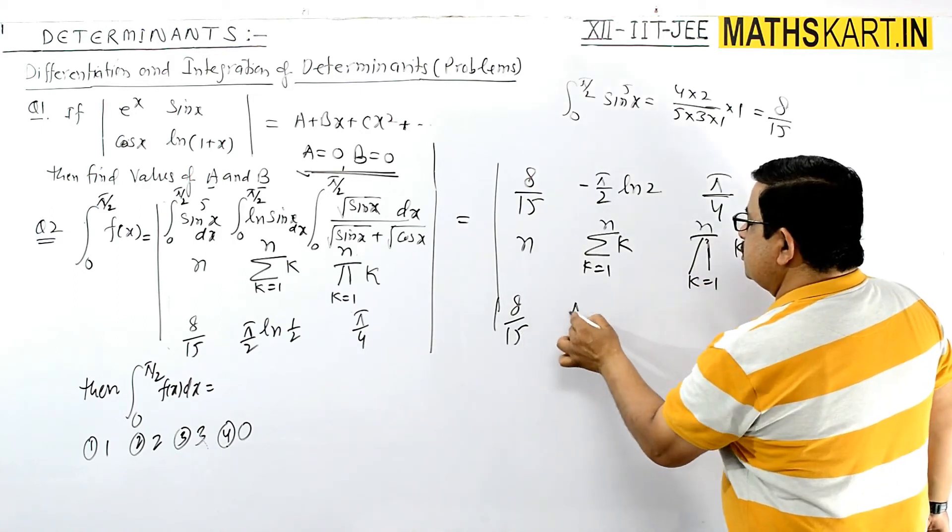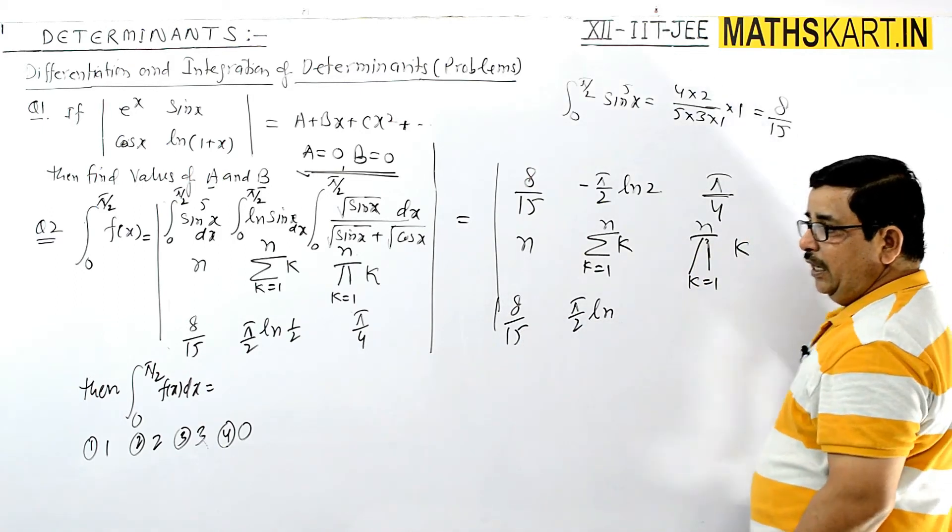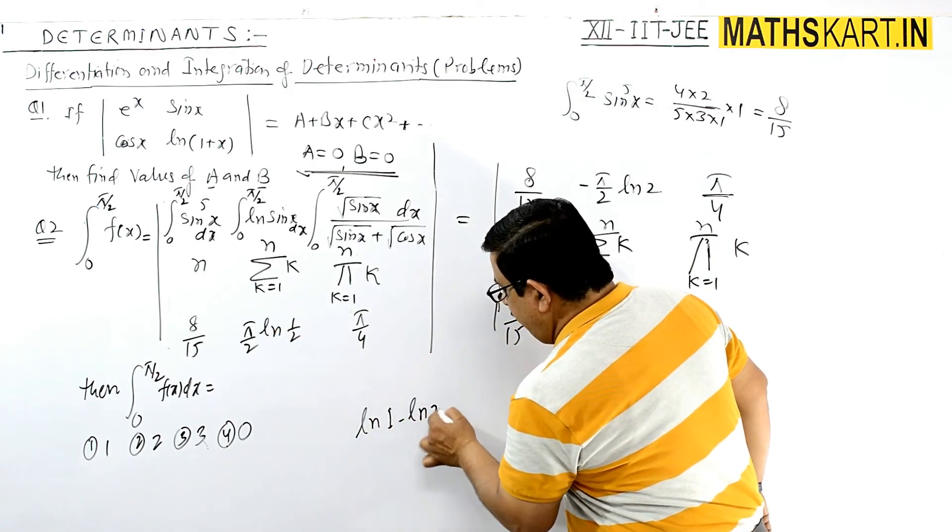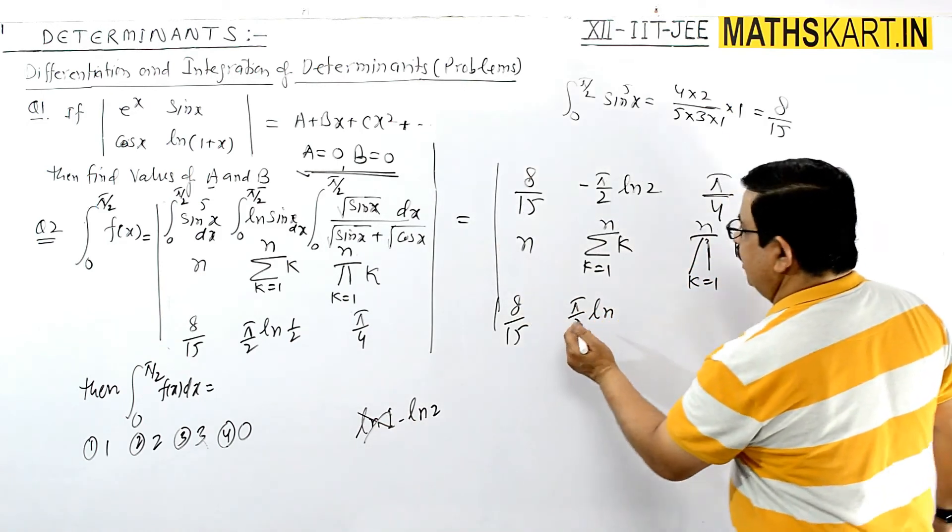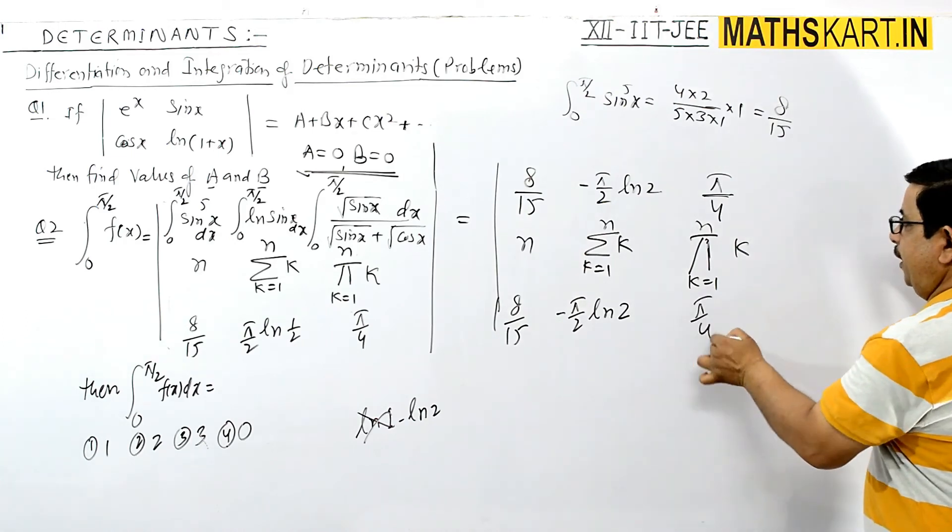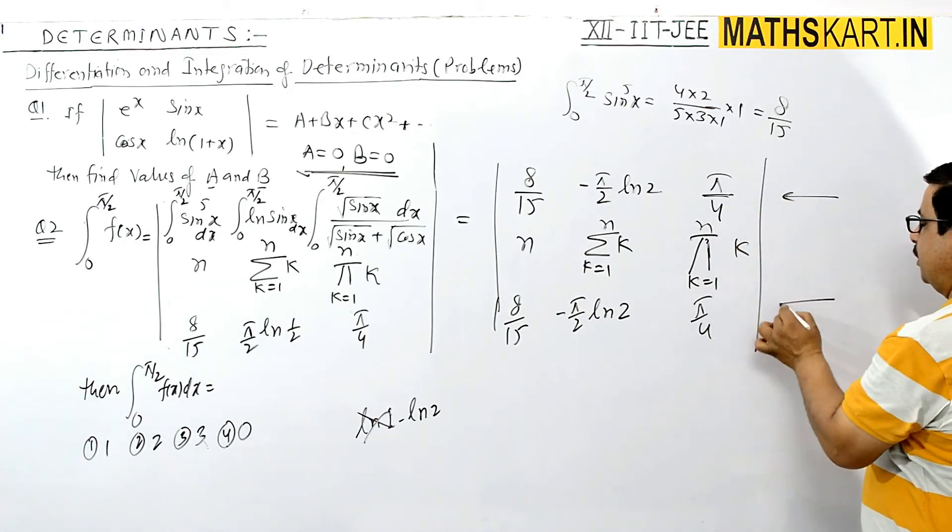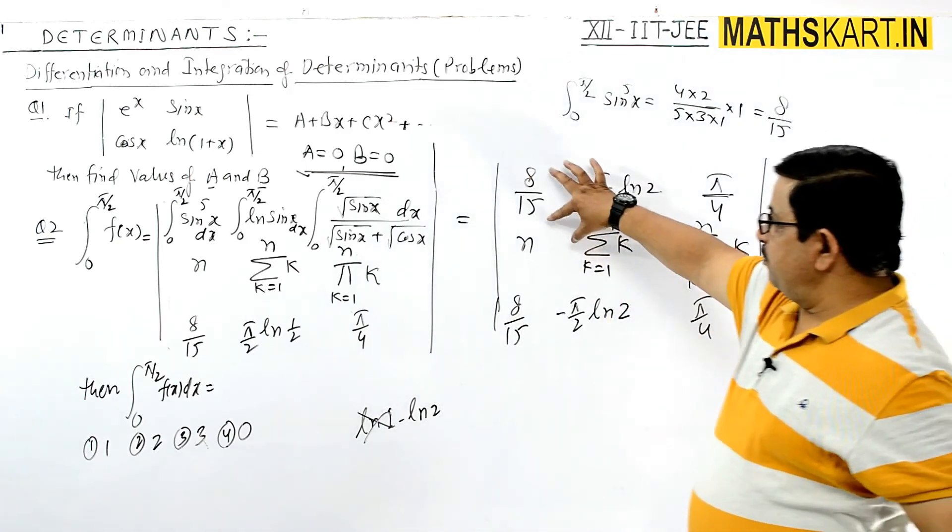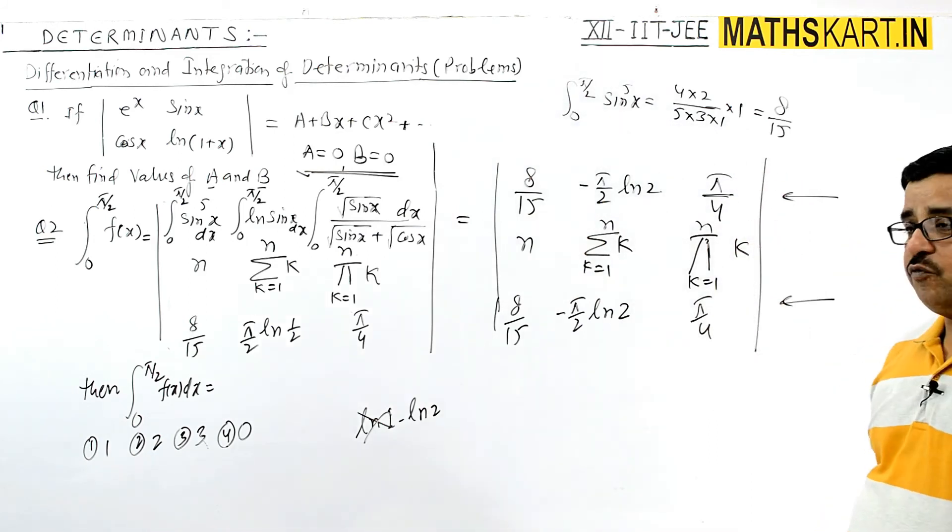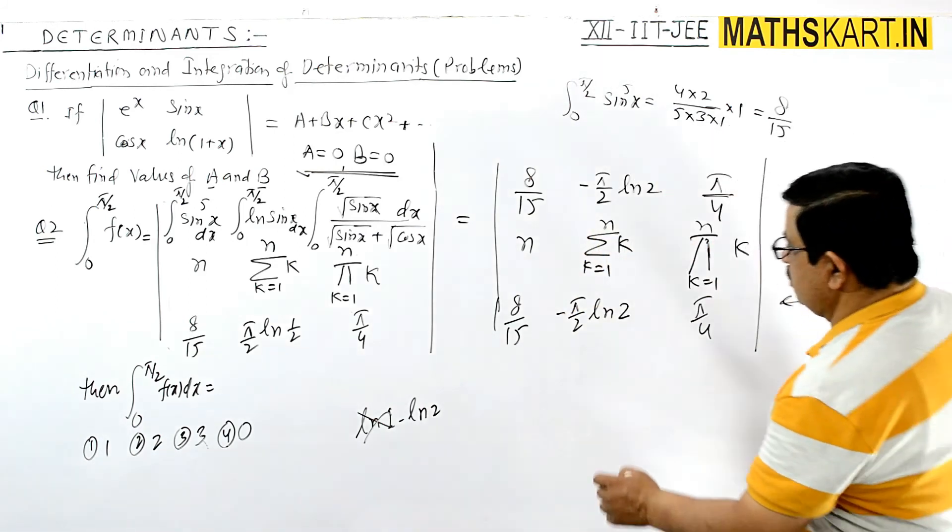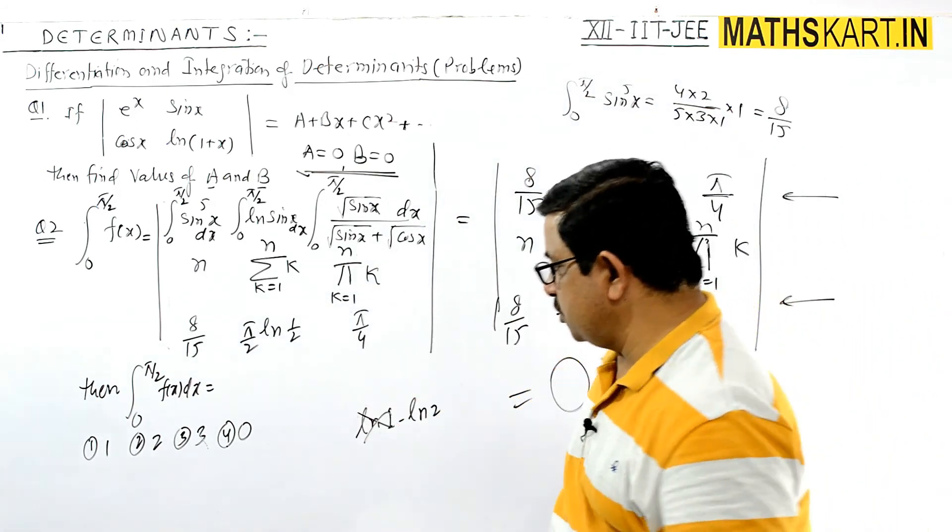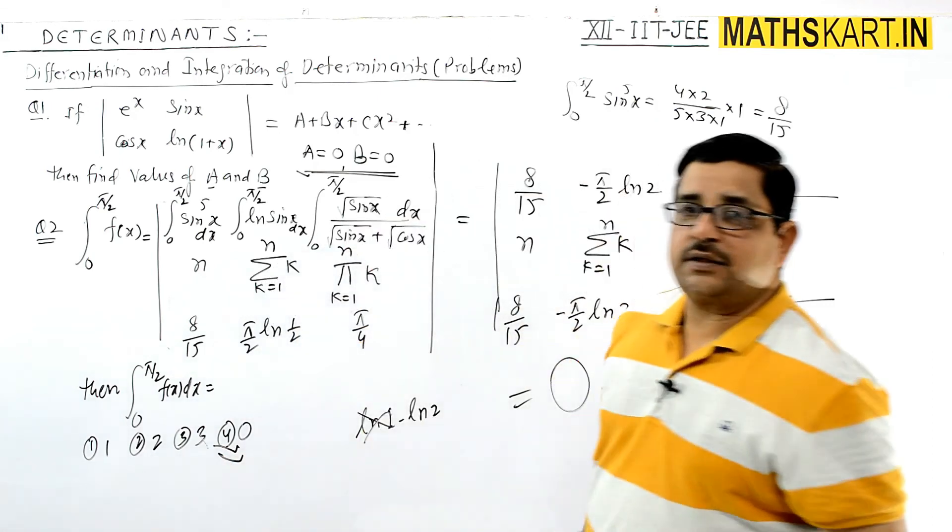This is pi by 2 ln 1 by 2. Now see, first row and third row is same: 8 by 15, 8 by 15, minus pi by 2 ln 2, minus pi by 2 ln 2, and this is again pi by 4. So value is 0. So this is the answer, 0. Question 2 has the answer 0. Fourth option is correct. This is the answer to the next one.